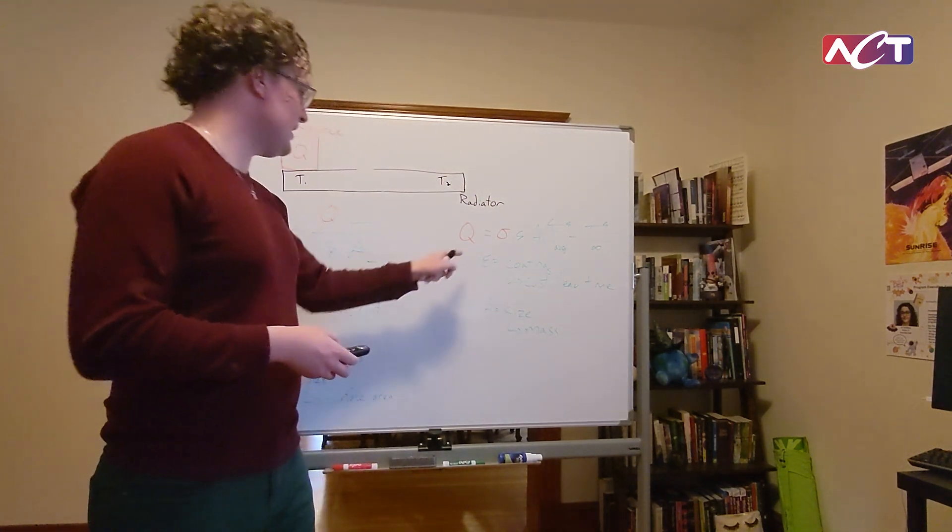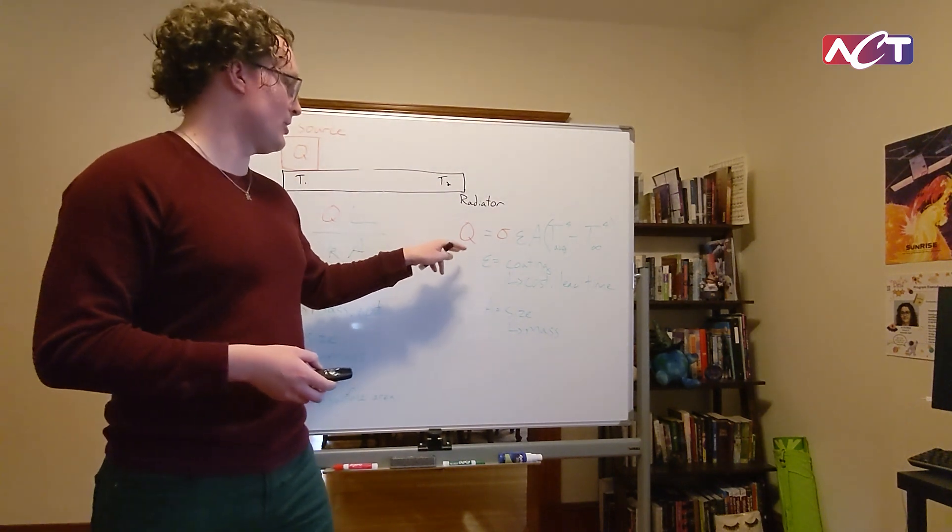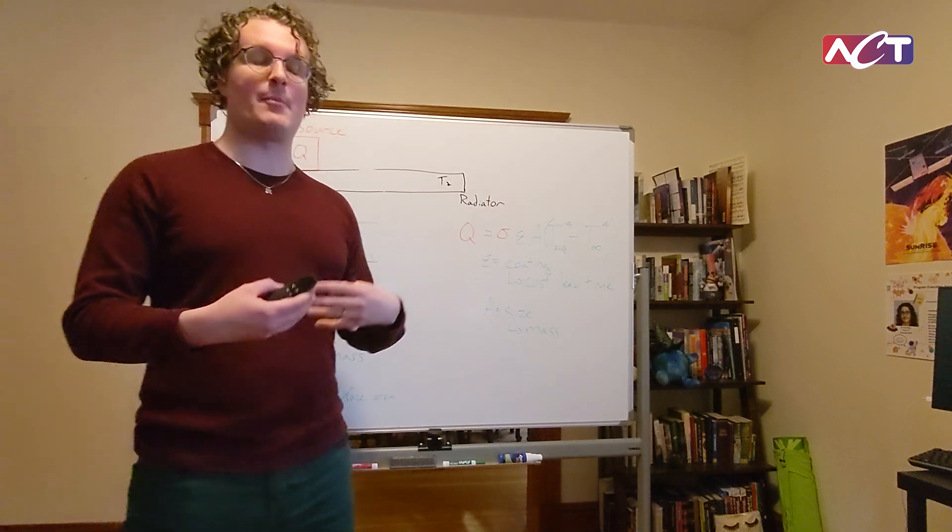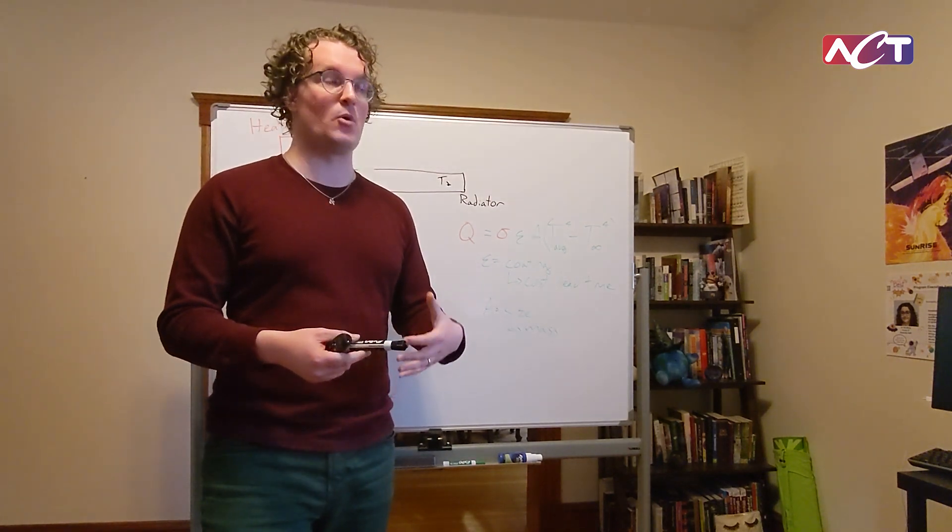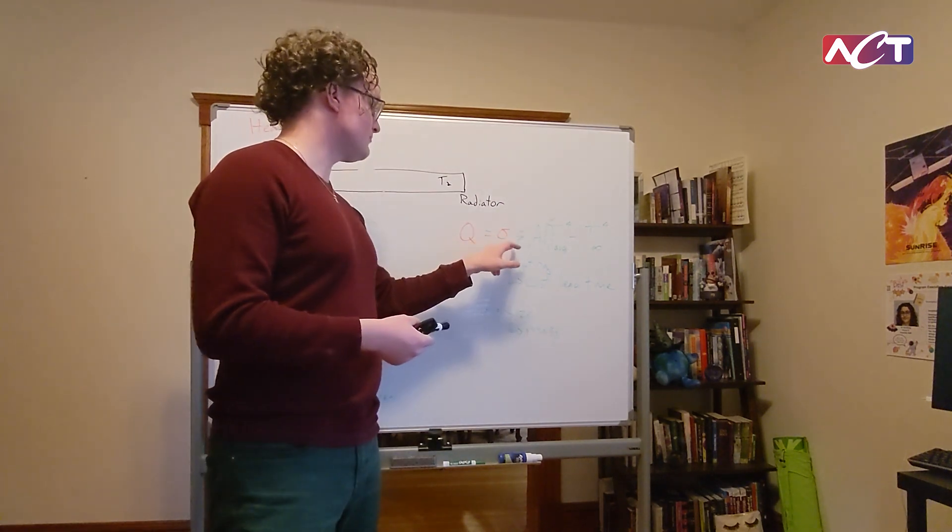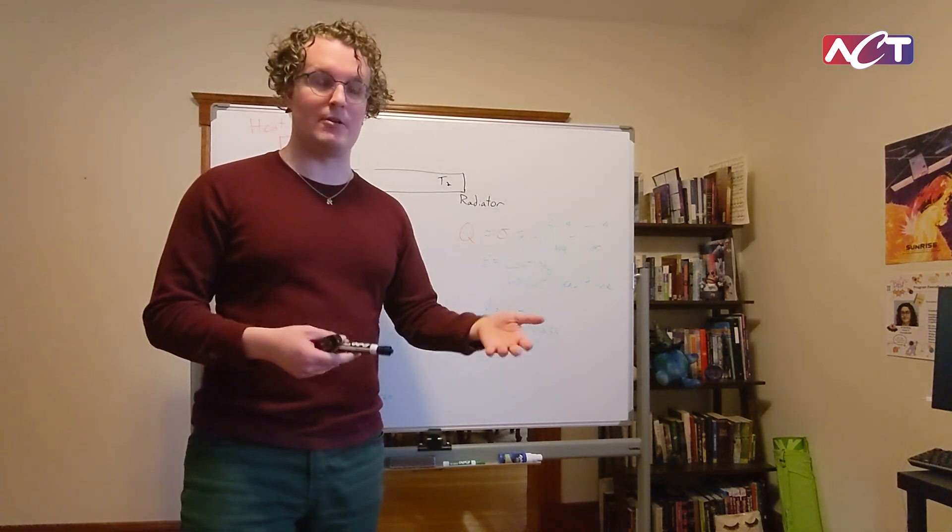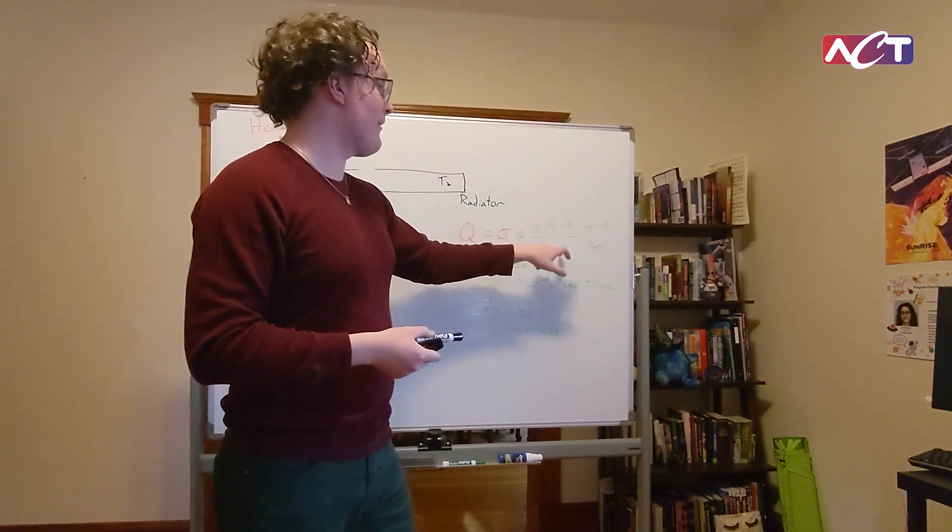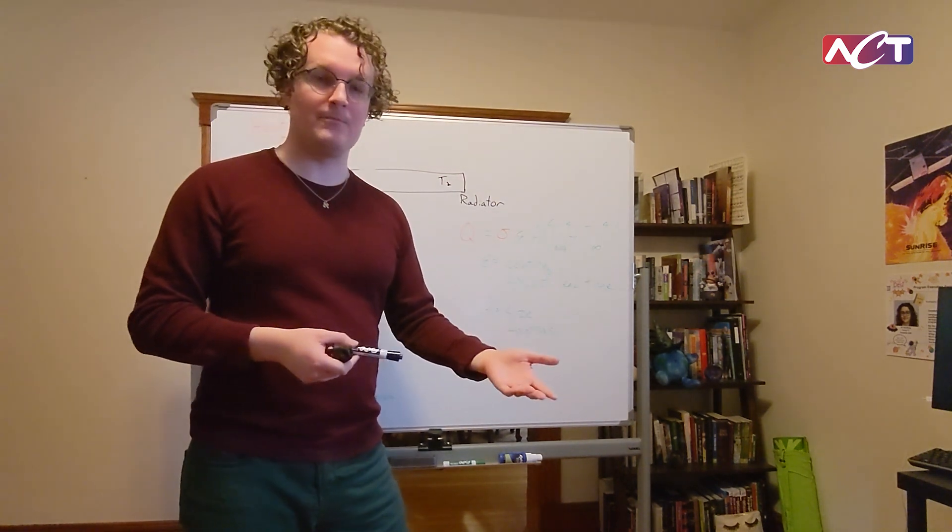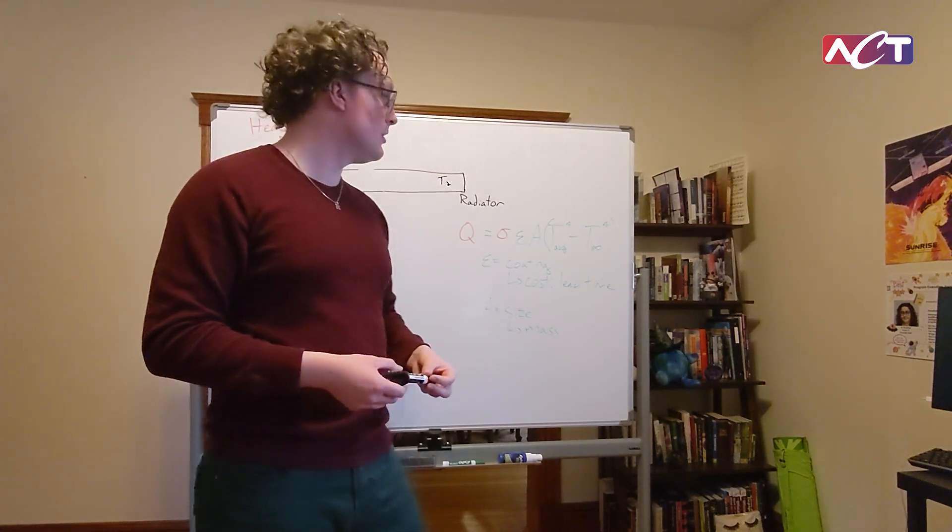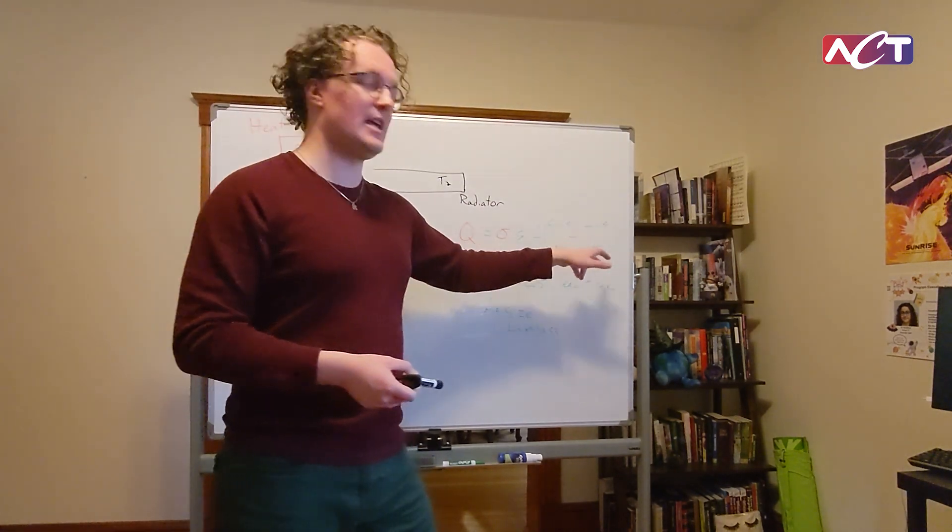The amount of heat radiated by a radiator is equal to a constant, don't worry about that one, times the emissivity which is a property of the surface, times the surface area of the radiator, times the average temperature of that radiator to the fourth power—and this temperature is in absolute units like Kelvin or Rankine—minus the temperature of the sink to the fourth power.